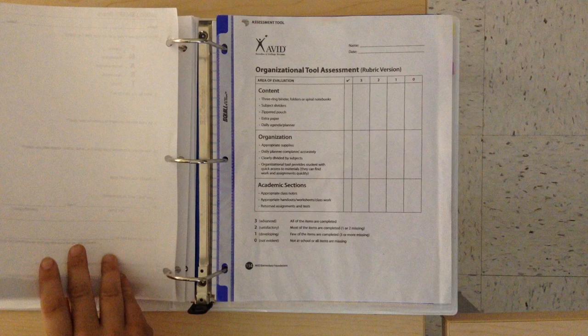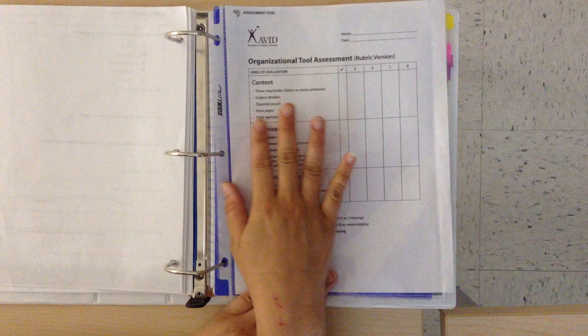Next, you will put in a sheet protector. On the front side of the sheet protector is a rubric for your AVID binder. These will be graded weekly. On the back side of the sheet protector is an anchor chart for SLANT to remind you what the behavior expectations are during lesson time in your class.